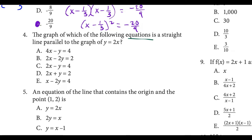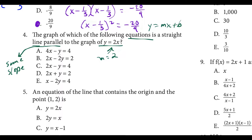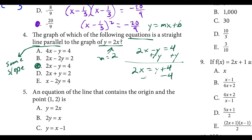For question four, we want to find an equation of a straight line parallel to y equals 2x. Anytime lines are parallel, they have the same slope. The line y equals 2x has a slope of 2, using y equals mx plus b. Scanning the answer choices for which one, when solved for y, has a 2 in front of x — it's choice C. Taking 2x minus y equals 4, adding y to both sides gives 2x equals y plus 4, then subtracting 4 gives y equals 2x minus 4. This line also has slope 2, making them parallel.